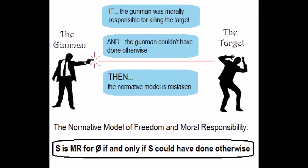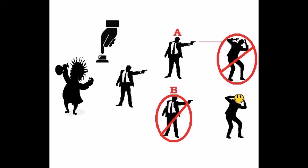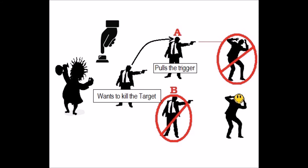Okay, now here's Frankfurt's counterexample. Suppose that, for whatever reason, the gunman wants to kill the target. And suppose that, for whatever reason, the evil neuroscientist wants him to kill the target too. As the gunman pulls out his gun to shoot the target, the evil neuroscientist is waiting to force him to pull the trigger, just in case the gunman changes his mind. But the gunman doesn't change his mind — the gunman wants to kill the target. So the gunman pulls the trigger, and the target dies.